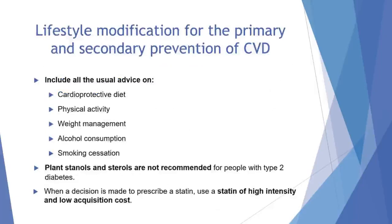People with an eGFR less than 60 and/or albuminuria are at increased risk of cardiovascular disease and therefore Q-risk is not appropriate for them. Lifestyle modifications for the primary and secondary prevention of cardiovascular disease include the usual advice on cardioprotective diet, physical activity, weight management, alcohol consumption and smoking cessation. We must also be aware that plant stanols and sterols are not recommended for people with type 2 diabetes. When a decision is made to prescribe a statin, we will normally use a statin of high intensity and low acquisition cost.